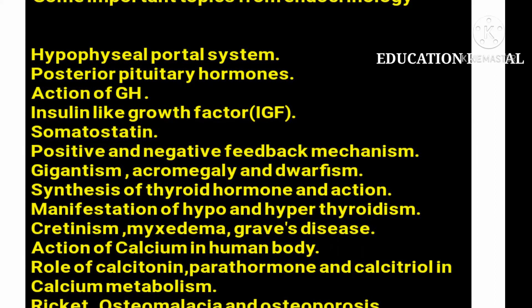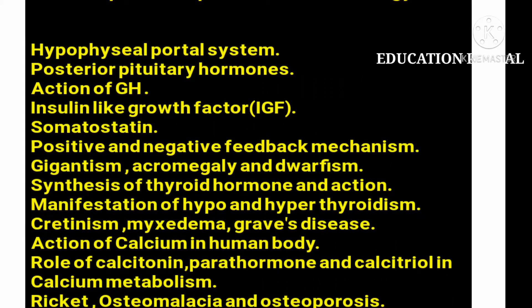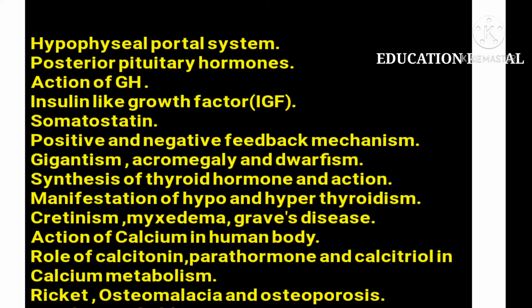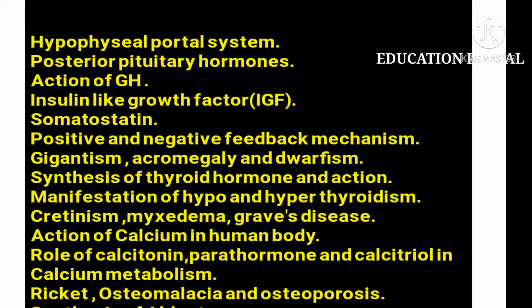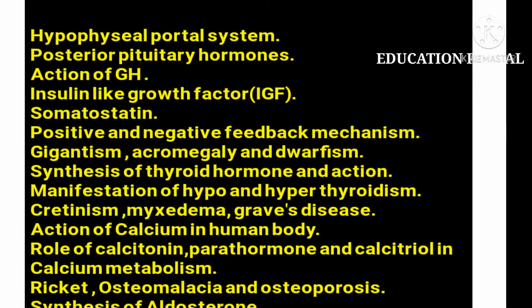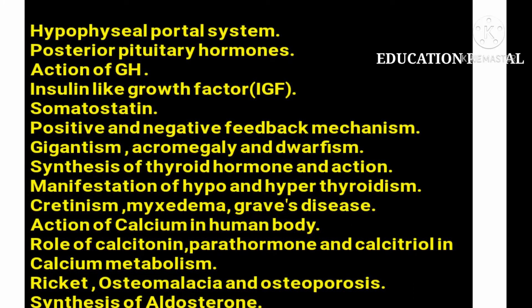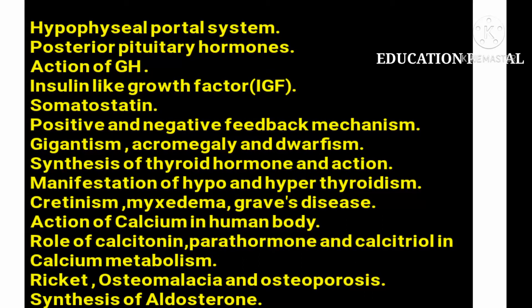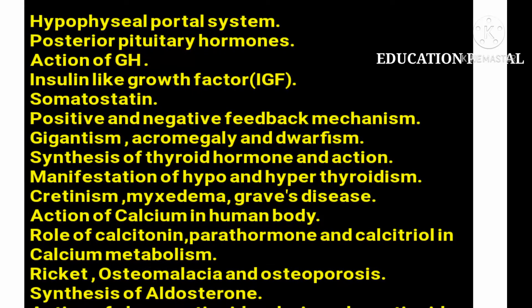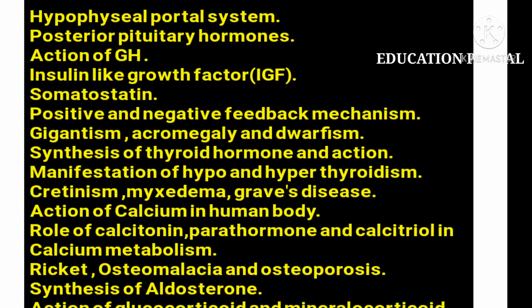The next important question is: what are the hormones of the posterior pituitary gland? Always remember there are two types of pituitary hormones — anterior pituitary hormones and posterior pituitary hormones. The examiner is asking about the posterior pituitary hormones, so your answer should include oxytocin and ADH (antidiuretic hormone).